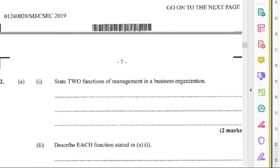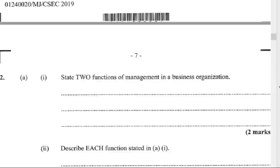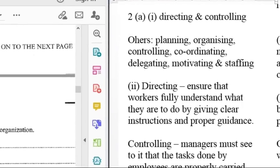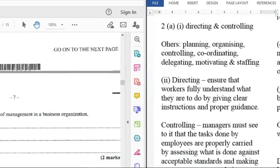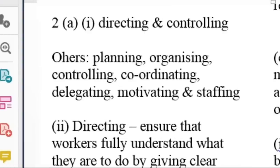Let's look at number 2A1. State two functions of management in a business organization. Two functions are directing and controlling. There are other functions as well: planning, organizing, controlling, coordinating, delegating, motivating, and staffing.